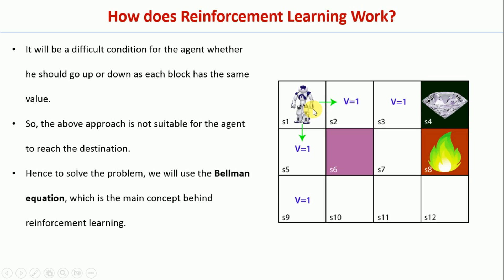To resolve this, we need to use an equation like the Bellman equation and assign different values to different cells. For example, a cell closer to the goal should be given a higher value, and each subsequent cell farther away should be given a smaller value. Since S2 is closer to S4 than S5, it will have a higher value, so the robot will follow that path. We will discuss in detail how to assign values using the Bellman equation in the next video.